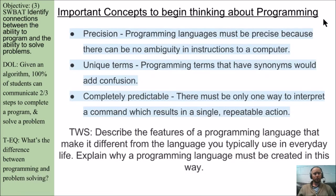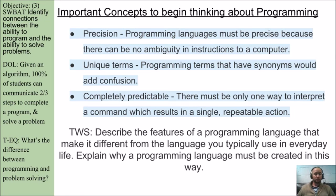There are three important concepts to begin thinking about programming. The first is precision — programming languages must be precise because there can be no ambiguity in the instructions to a computer. The second is unique terms — programming terms that have synonyms would be confusing, so be careful with what you name your functions.